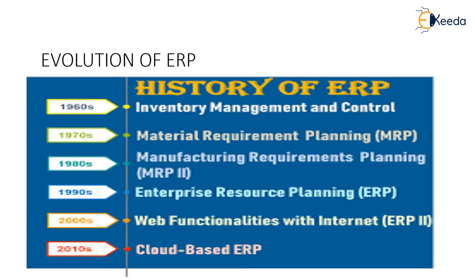The total history of ERP is as follows: in the 1960s, inventory management and control was done; in the 1970s, material requirement planning was done; in the 1980s, MRP2 or manufacturing resource planning was done; in the 1990s, enterprise resource planning came into existence; in the 2000s, web functionalities with ERP2 came into existence; and finally, after 2010, cloud-based ERP, the latest technology, is being used.